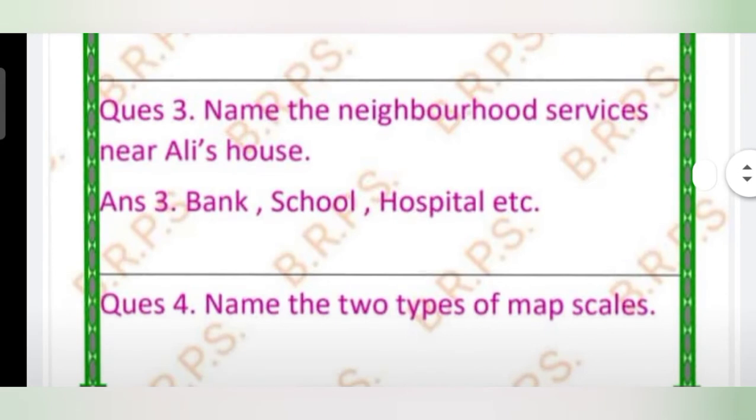Question number 3: Name the neighborhood services near Ali's house. Answer is bank, school, hospital. You can write other answers.